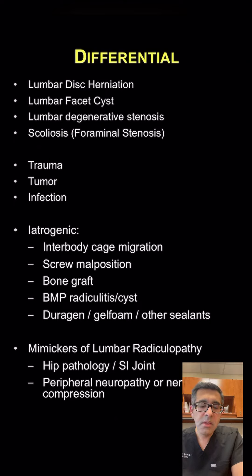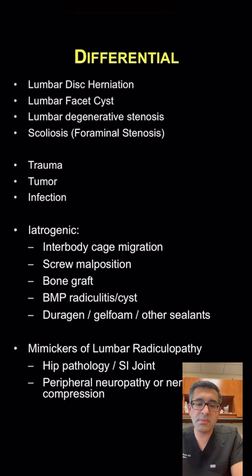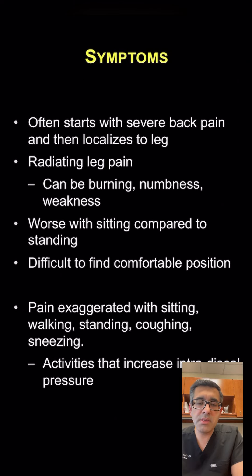Importantly, we have to make sure that this is not caused from a problem outside of the spine, because symptoms of hip pathology or SI joint pain or nerve compression outside of the spine such as piriformis syndrome can sometimes cause symptoms that mimic lumbar radiculopathy.